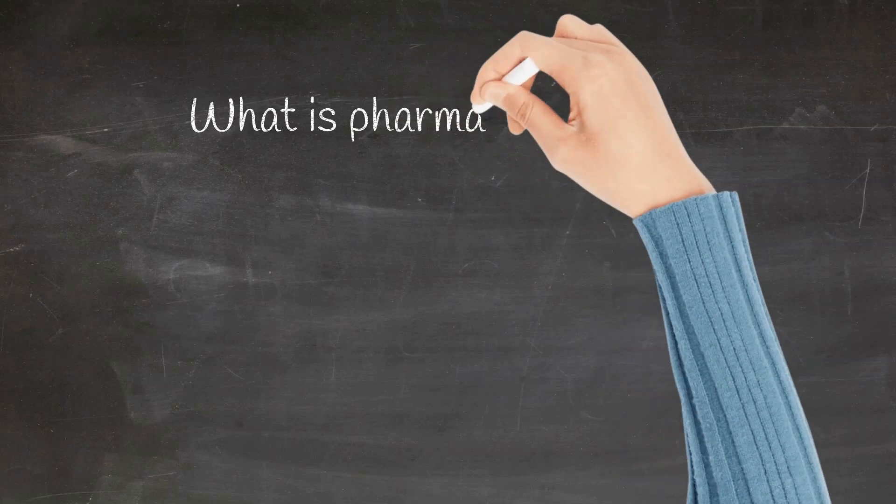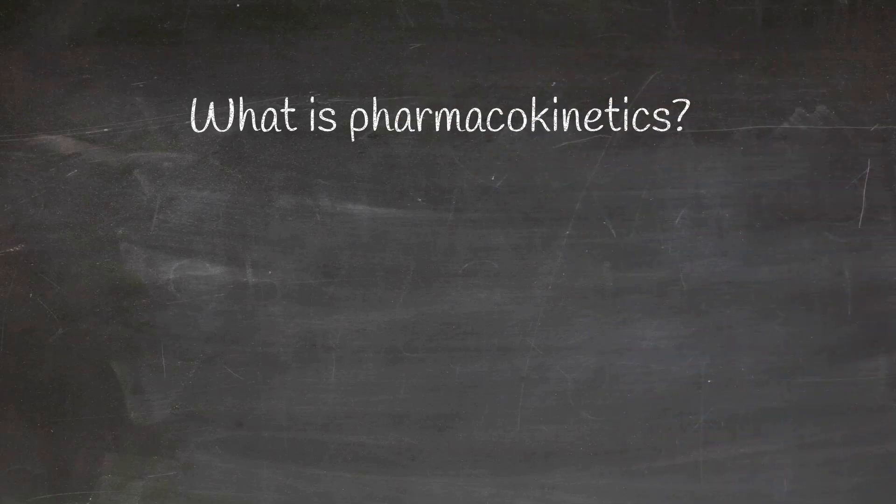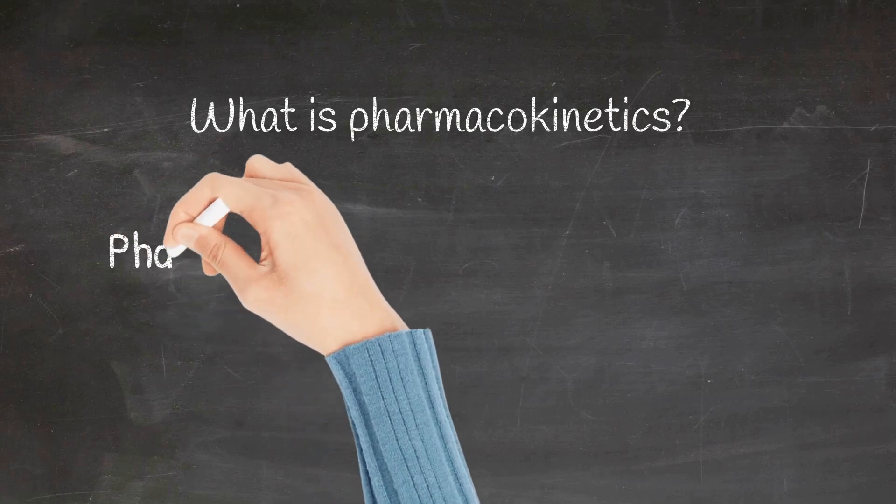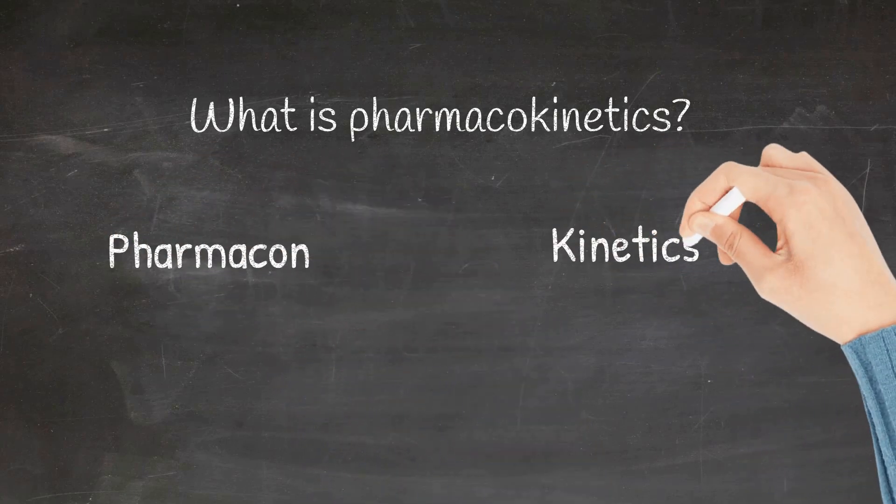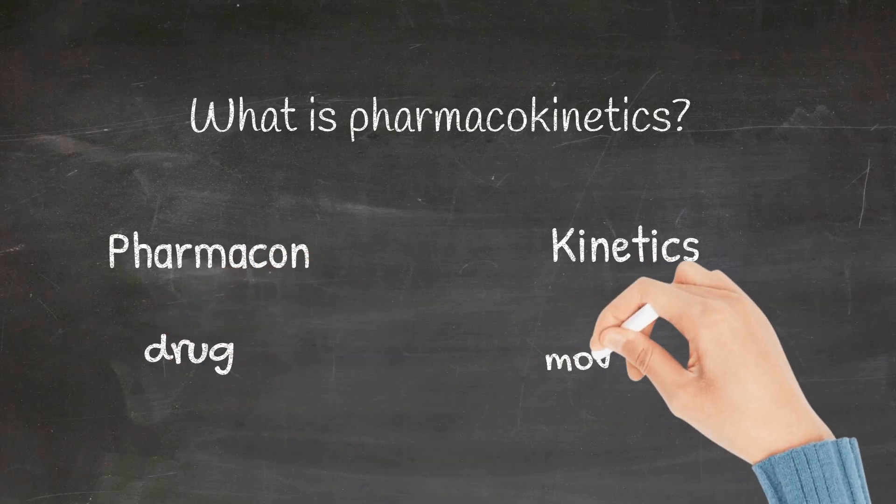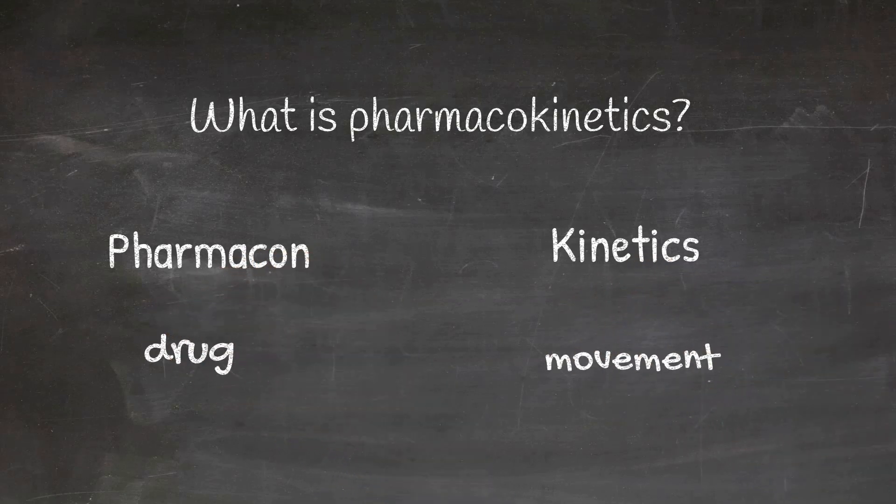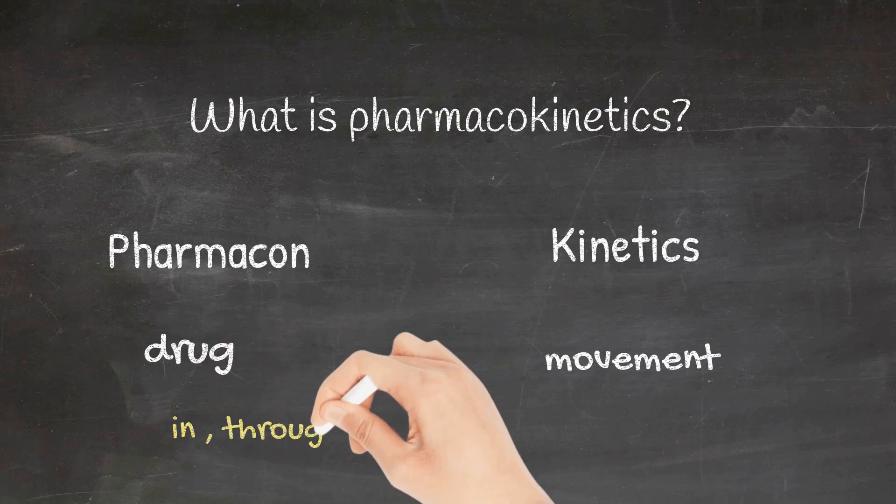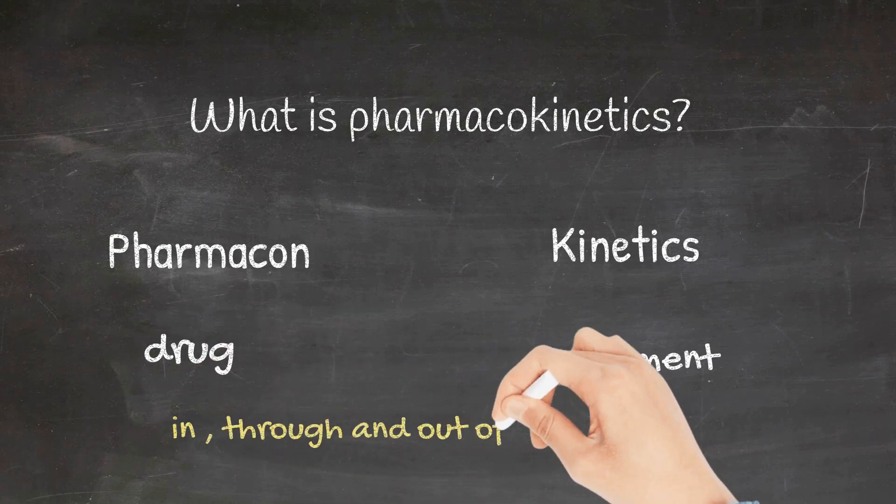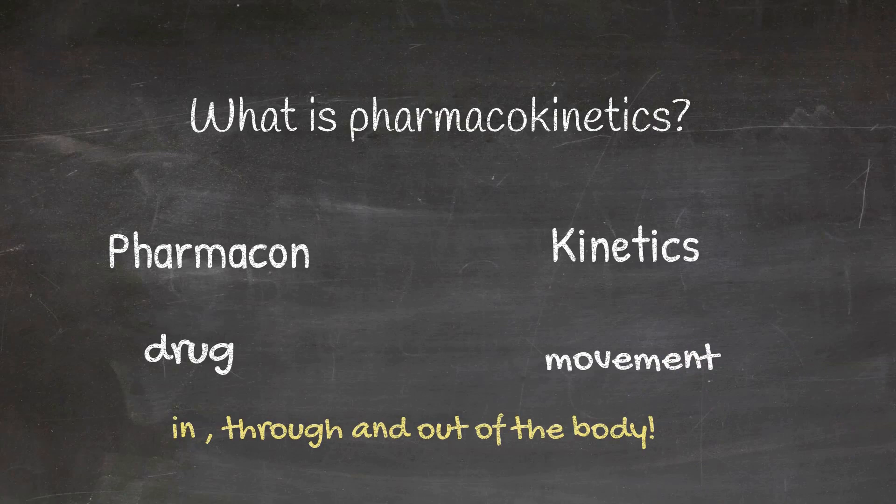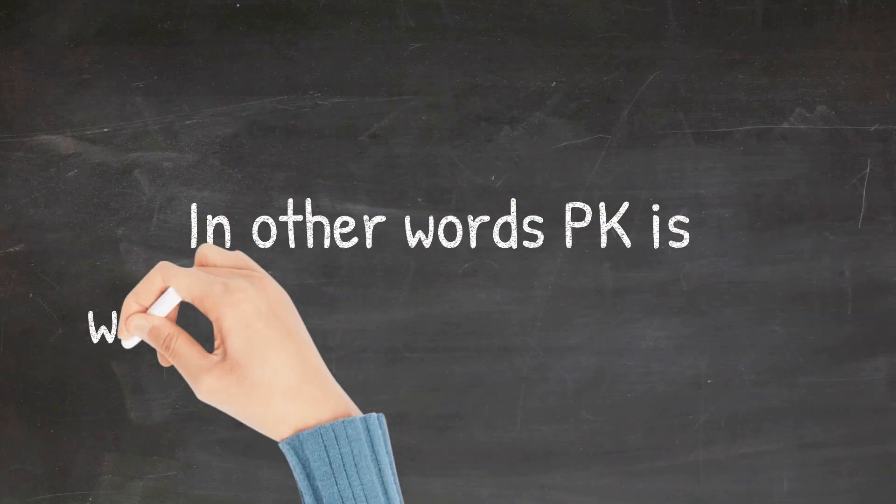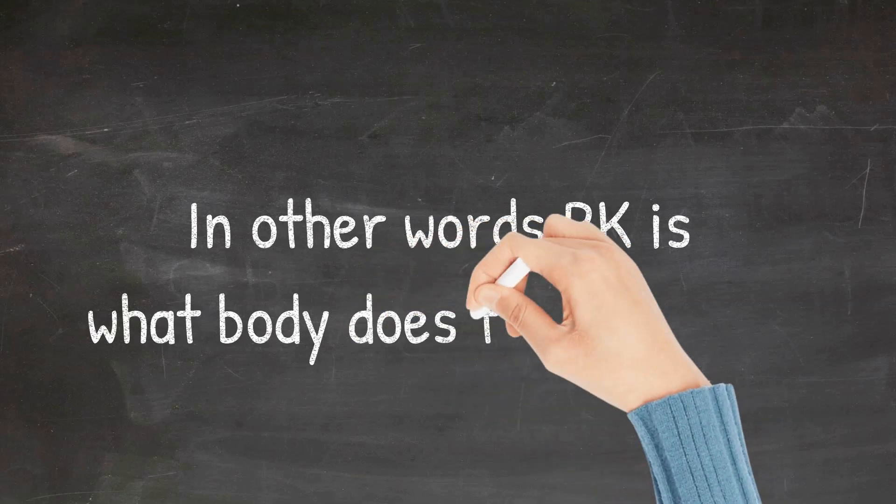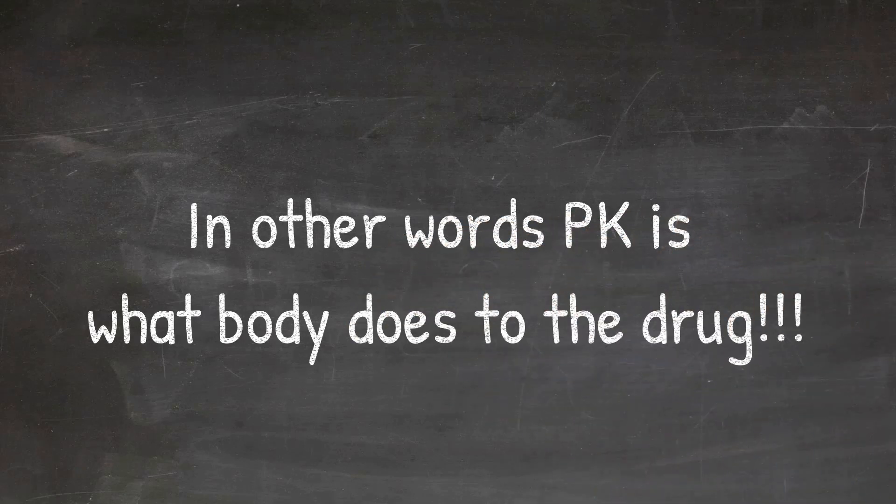Let's try to understand what is pharmacokinetics. Let's just split up the word into pharmacon and kinetics. Pharmacon means drug and kinetics means movement. It is movement of the drug in, through, and out of the body. In other words, pharmacokinetics means what the body does to the drug.